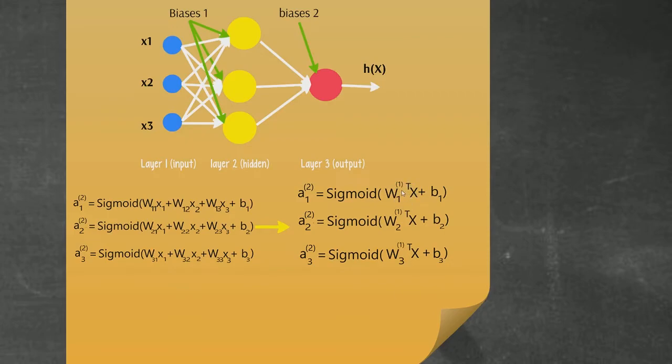And this one indicates the first set of weights, which means these weights. If we had another layer here, or if we actually modeled these weights here, they are going to be W2.